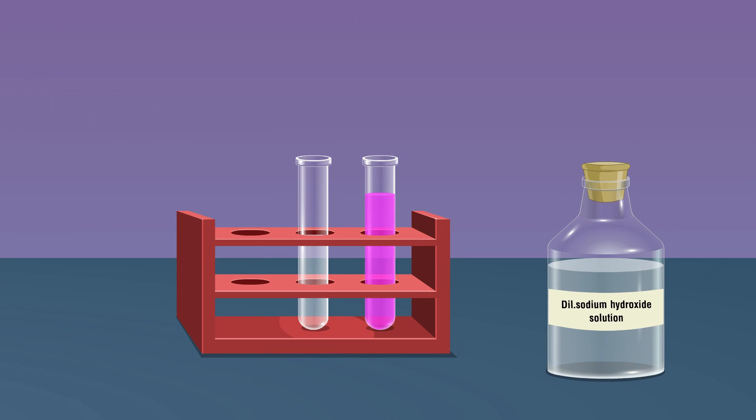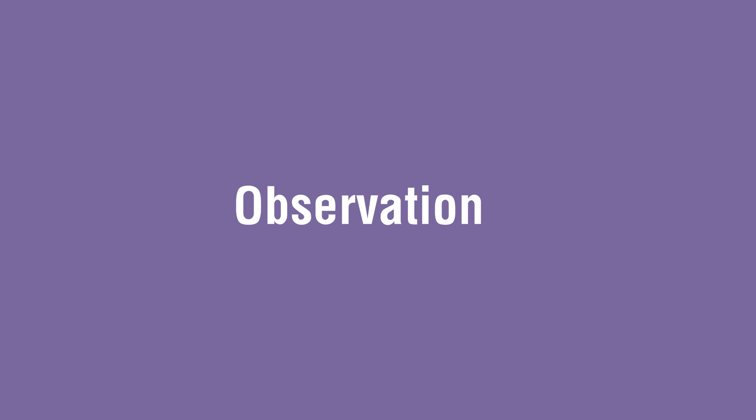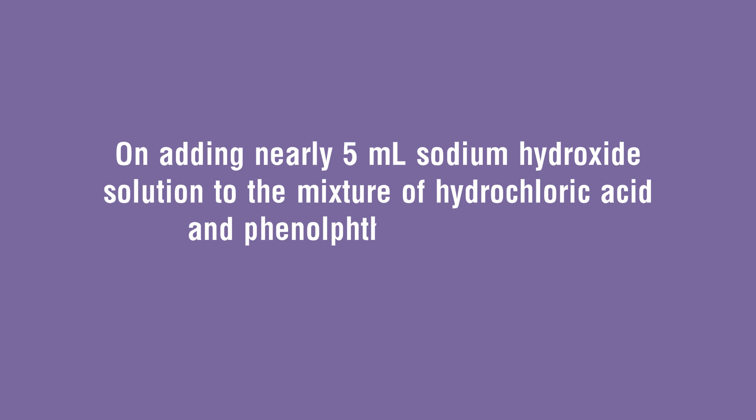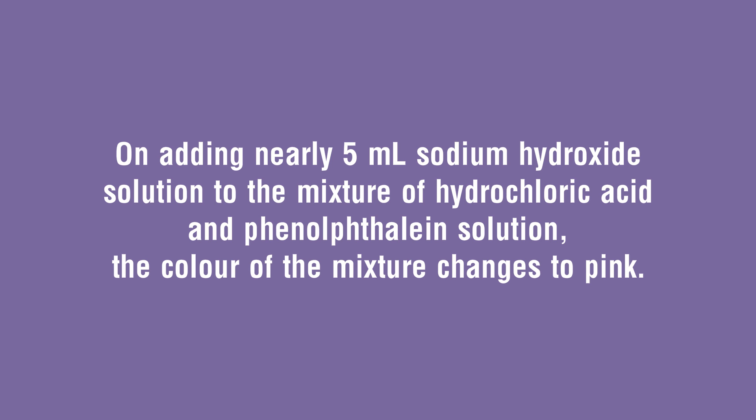If hydrogen ions, H+, as found in an acid, were added to the pink solution, the equilibrium would switch and the solution would be colorless. Adding hydroxide ions, OH-, as found in bases, will change the phenolphthalein into its ion and turn the solution pink.